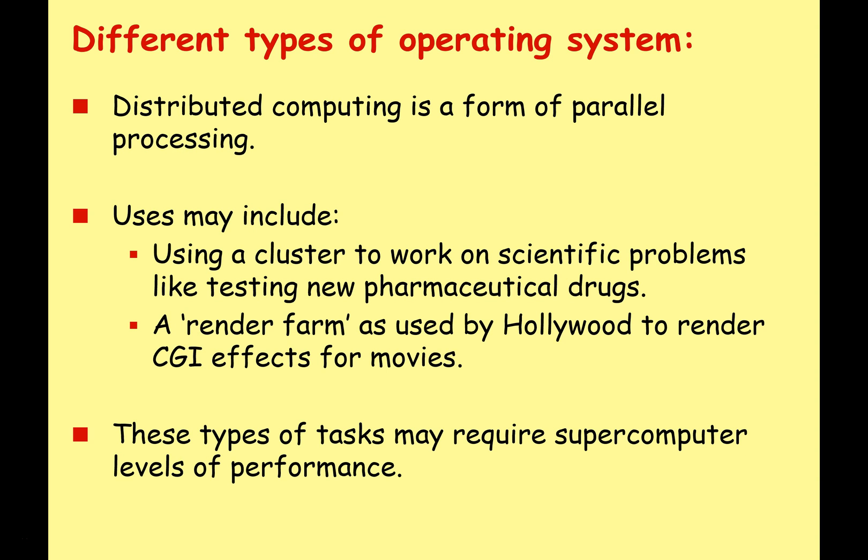Distributed computing is a form of parallel processing. We can use clusters of computers to work on scientific problems like testing new drugs, or as a render farm for a Hollywood movie to render complicated computer graphic effects. These kinds of tasks often require supercomputer levels of performance, but if we can get enough computers working together in parallel, it gives us a similar level of resources. However, the distributed OS has to tie all these computers together in a very special way, which can be quite complicated to program.